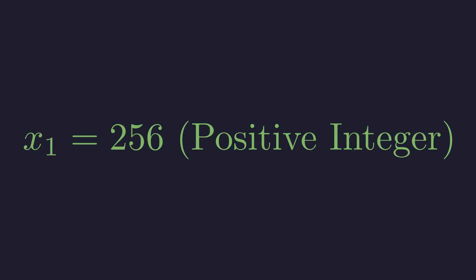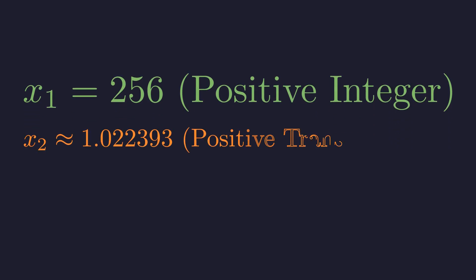First, the elegant integer solution, x equals 256, found by restructuring the equation. Second, a positive transcendental solution, x2 approximately equals 1.022, which we found using the Lambert W function.